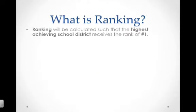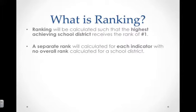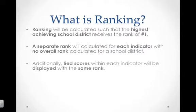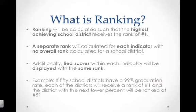Ranking is calculated such that the highest achieving school district receives a ranking of number one. A separate rank will be calculated for each indicator, with no overall rank calculated for a school district. Tied scores within each indicator will be displayed with the same rank. For example, if 50 school districts have a 99% graduation rate, each of those districts will receive a rank of number one, and the district with the next lower percent will be ranked number 51.